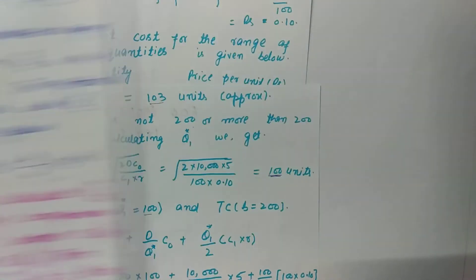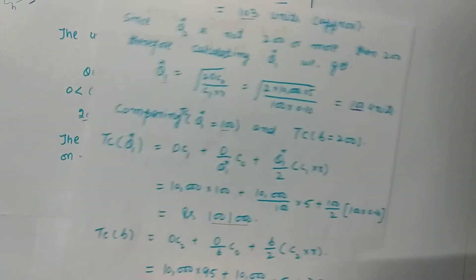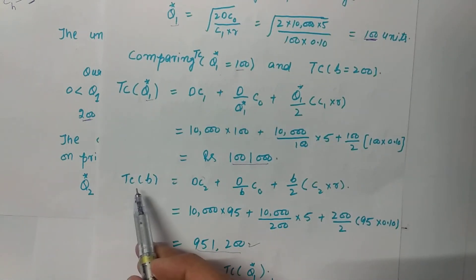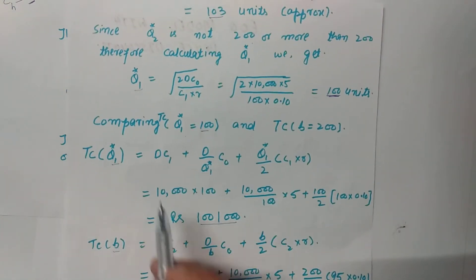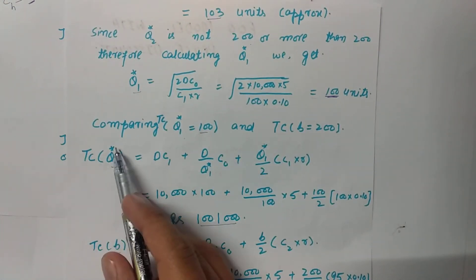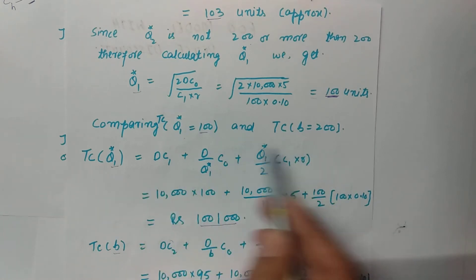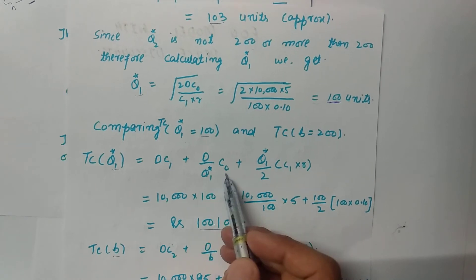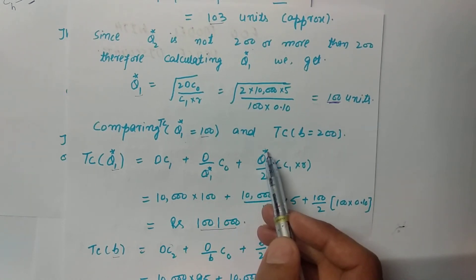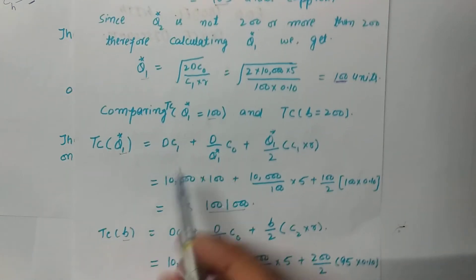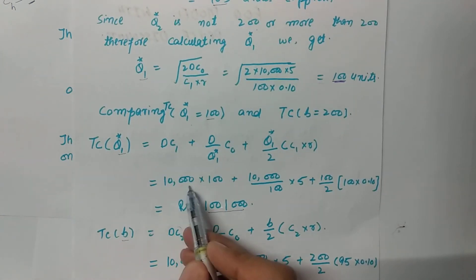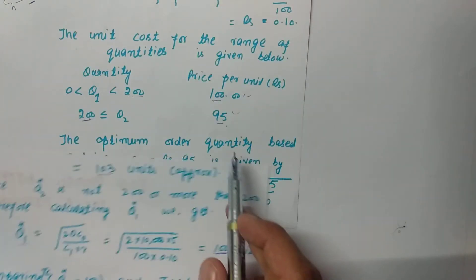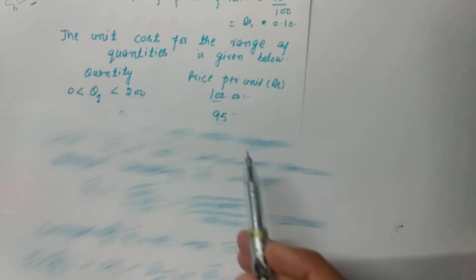The total cost formula is: TC = D × C1 + (D / Q*1) × ordering cost + (Q*1 / 2) × C1 × R. Substituting D = 10,000, C1 = 100 rupees, ordering cost = 5, Q*1 = 100, and R = 0.10, we calculate the total cost corresponding to Q*1.